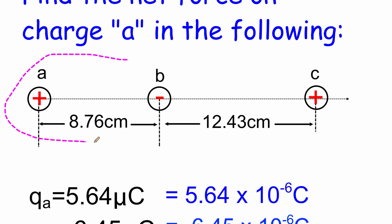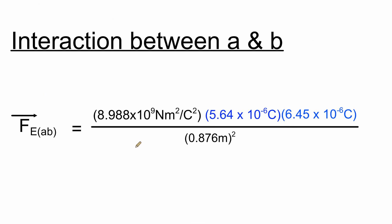We're going to start by looking at the interaction between A and B. B is negatively charged and A is positively charged, so B will be pulling A towards the right. The equation is K — Coulomb's constant, 8.988 times 10 to the 9th newtons meter squared per Coulomb squared — times the charge on A, 5.64 times 10 to the negative 6 Coulombs, times the charge on B, 6.45 times 10 to the negative 6 Coulombs.